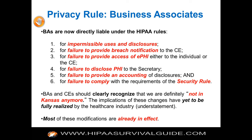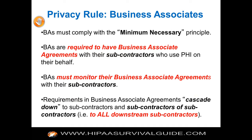It should be clear that we're just not in Kansas anymore with respect to this whole business associate relationship introduced by the HITECH Act. BAs have to comply with the minimum necessary principle. BAs are required to have business associate agreements with their own BAs. BAs must monitor their business associate agreements with their subcontractors and with their covered entities. Covered entities and business associates now have reciprocal monitoring responsibilities of the contract.